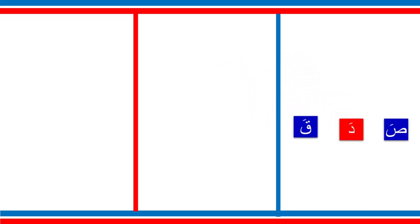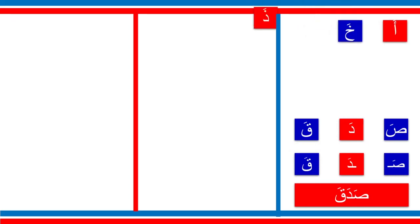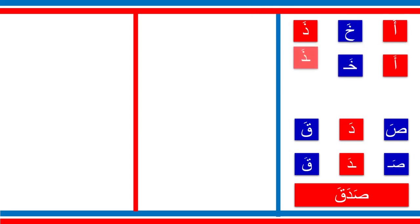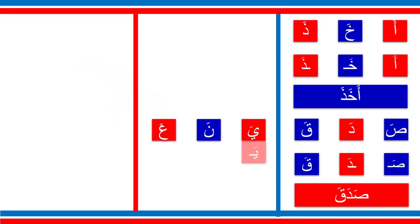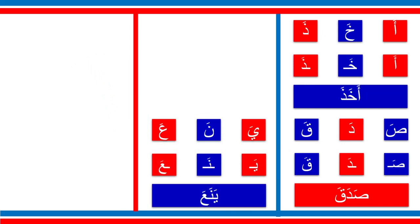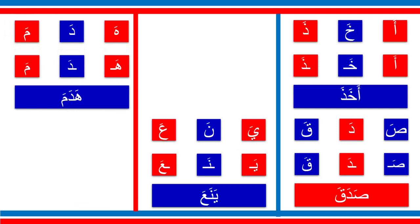Next we have these letters. I will read them — if you want to practice them, pause the video. We have A-Kha in the starting, Ha in the middle, Da in the end — so we have akhada. Then we have these letters: Ya in the starting, Na in the middle, A in the end — yana.